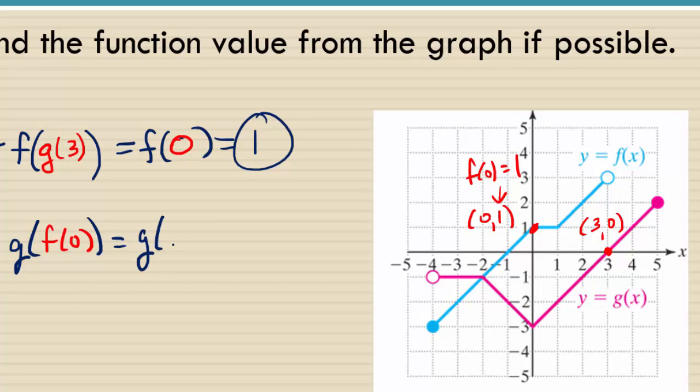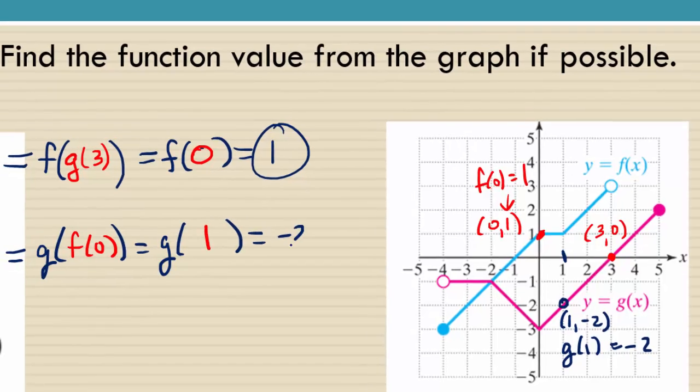So I have my g function, which is the outer function. And inside of it, I now have f of 0 is 1. So now I have an x value on my g function. So I go and look for the x value 1 on g, and what do you see? Good. So if you go to 1 and go down to the pink graph, we go through the point 1, negative 2, which means that in function notation, that's saying g of 1 is negative 2. So this is negative 2.